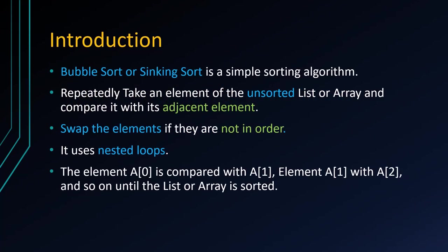Introduction. Bubble sort, also called sinking sort, is a very simple sorting algorithm. It repeatedly takes an element of the unsorted list or array and compares it with its adjacent element. It uses nested loops. The zeroth element is compared with the first element of the array, and similarly the first element is compared with the second element and so on until the array is sorted.